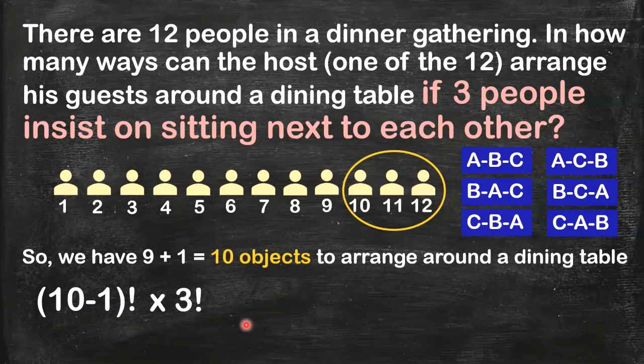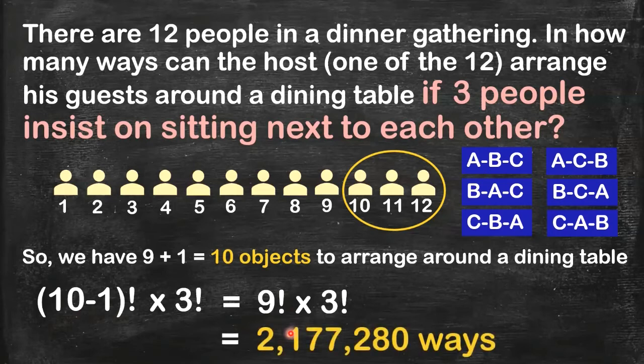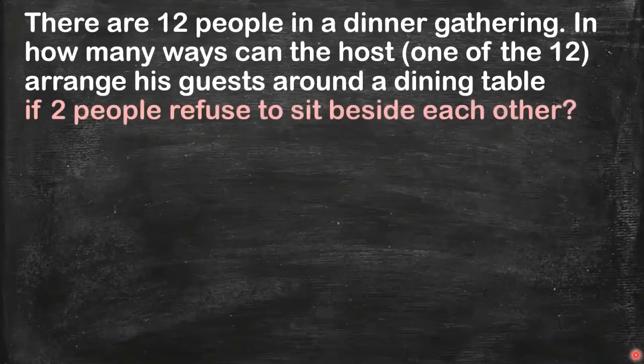So the answer for this condition is 9 factorial times 3 factorial. If you simplify further using your calculator, you should be getting the numerical value for that.